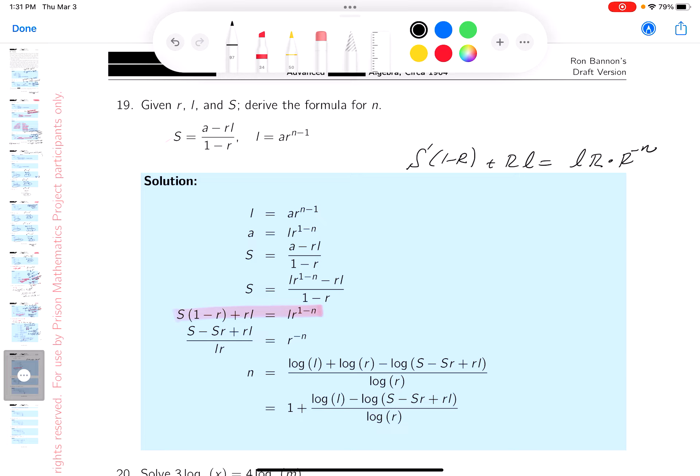Then I would divide both sides by lr. You'd get S(1 minus r) plus rl over lr equals r to the minus n.